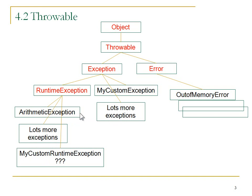There are lots of exceptions defined in the SDK that are RuntimeExceptions and lots that are defined under Exception. We're going to talk about the difference between things inheriting from RuntimeException and things inheriting from Exception. We're also going to make our own classes that inherit from Exception - those are our custom exceptions. When we have a specific thing we want to look for at runtime, we can throw an object of our own creation.